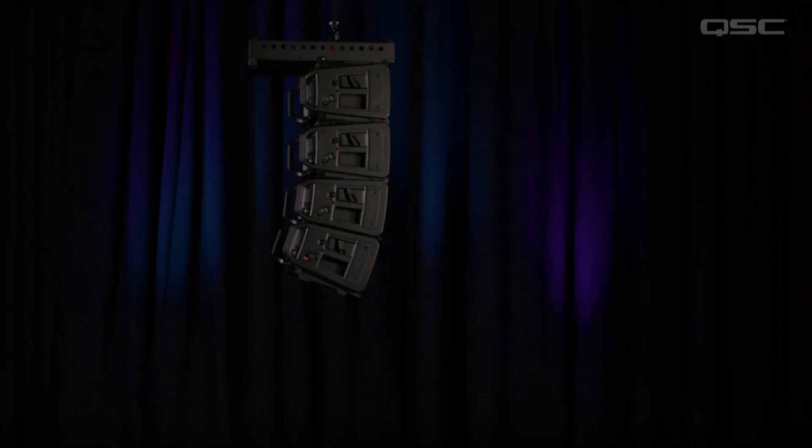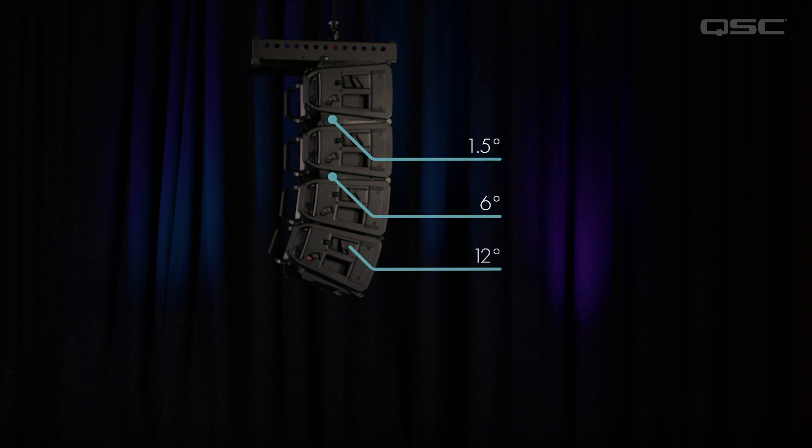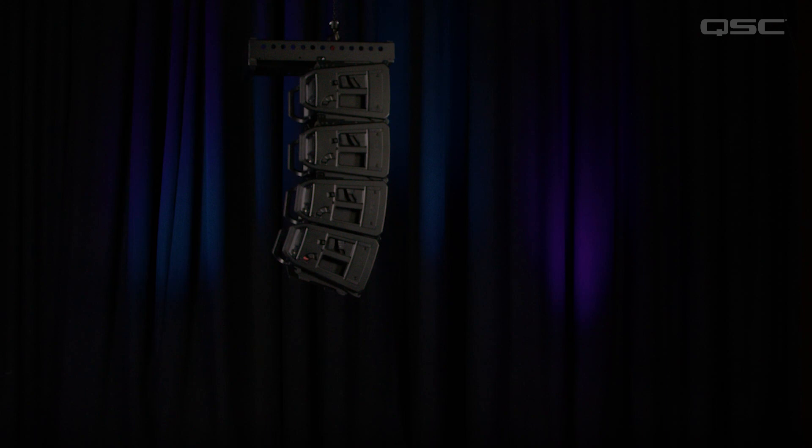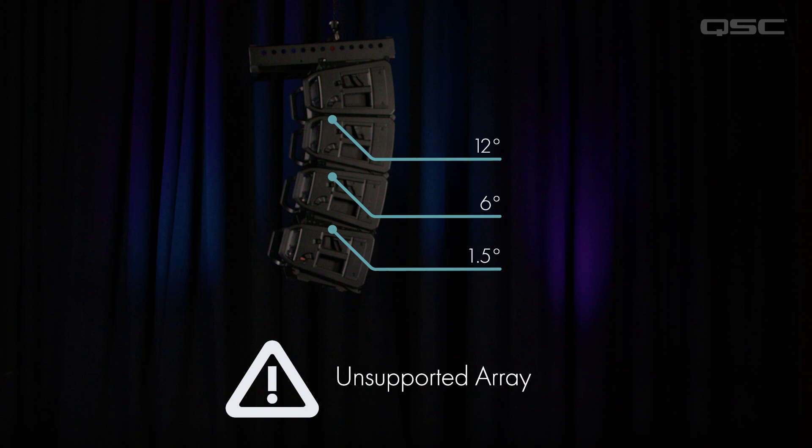The splay angles must either match or progressively increase in size from the top of the array to the bottom. For example, we have a 4-box array here with angles of 1.5, 6, and then 12 degrees from top to bottom. An example of an unsupported array would be if you had the angles set to 12 degrees, 6 degrees, and then 1.5 degrees from top to bottom — no good.